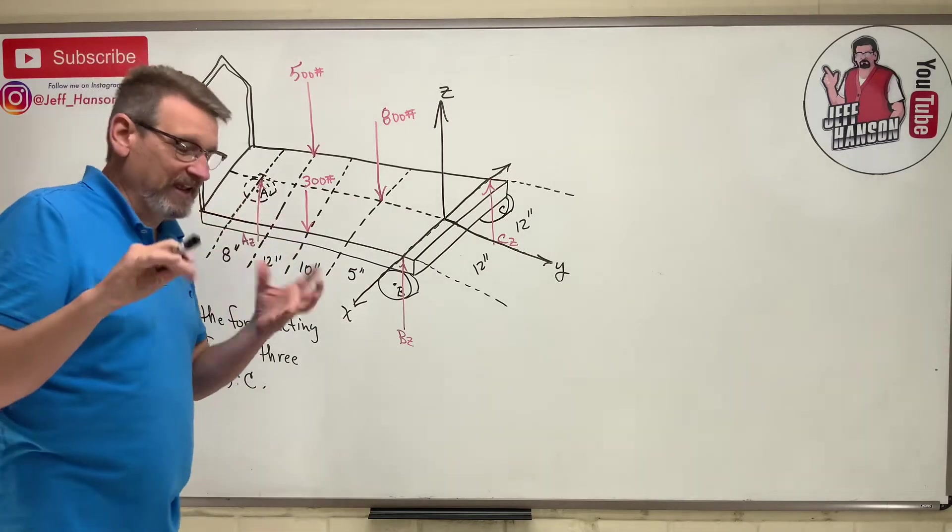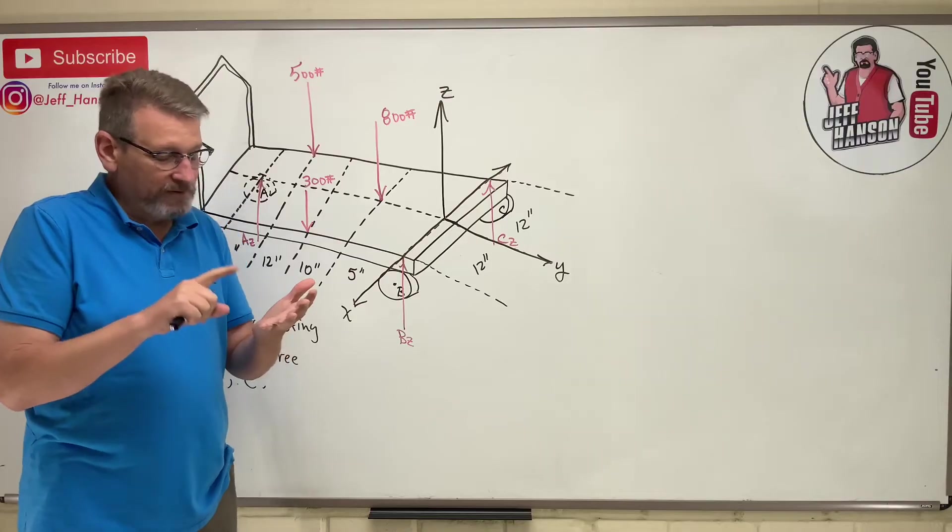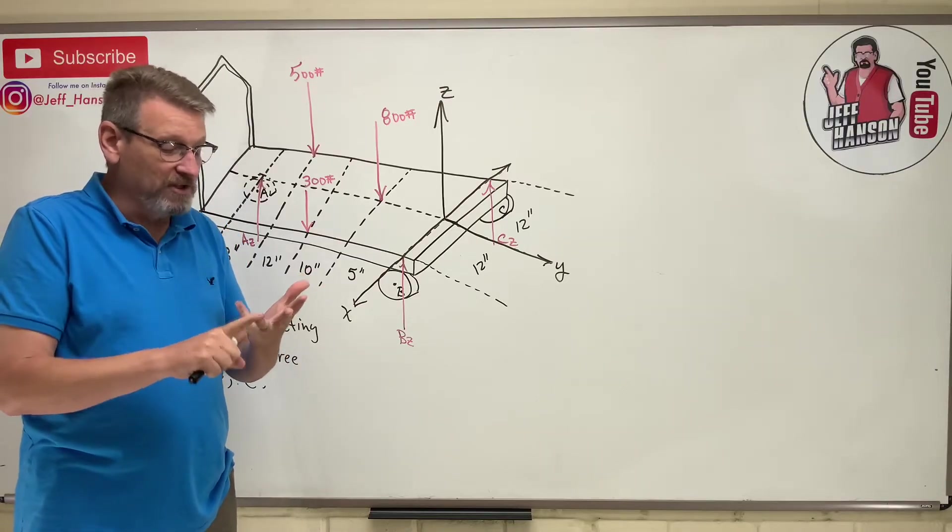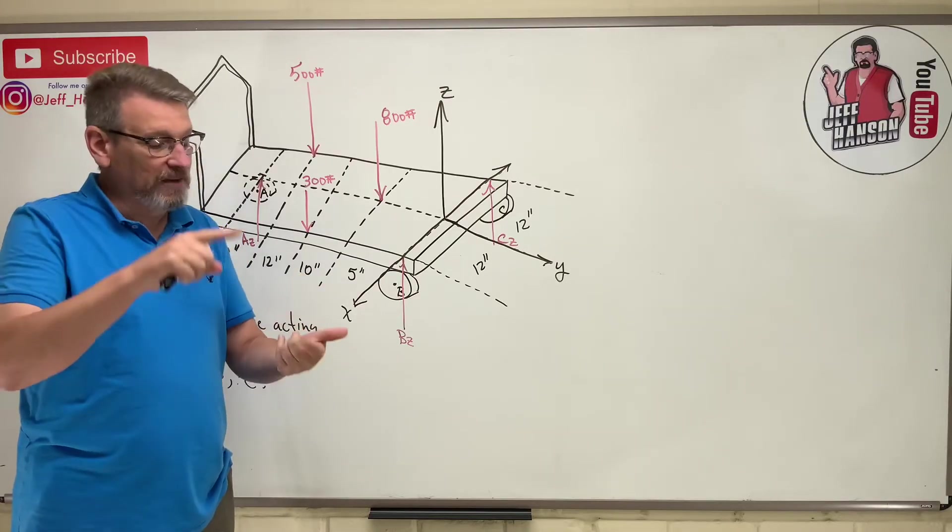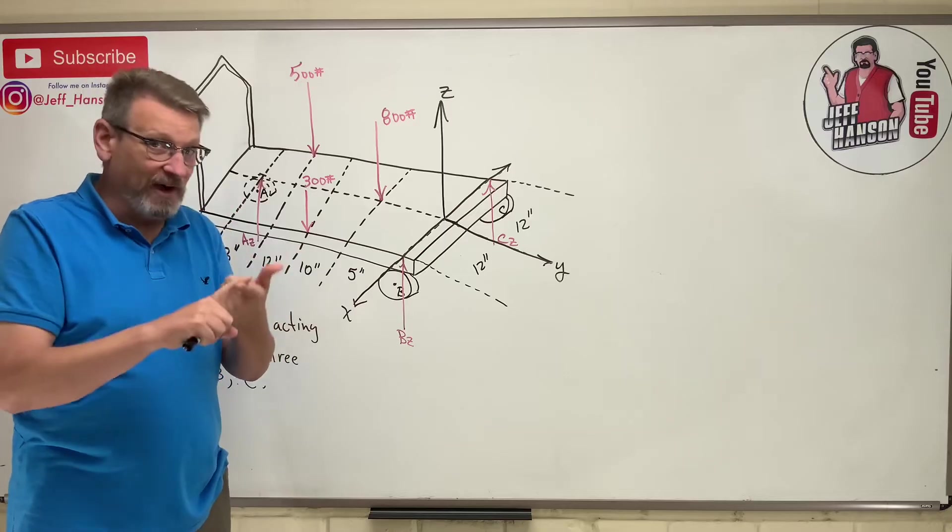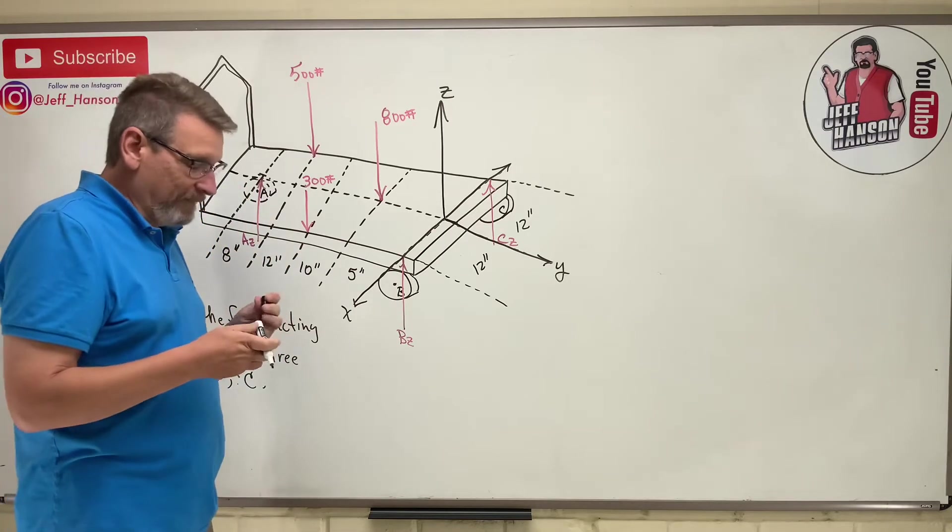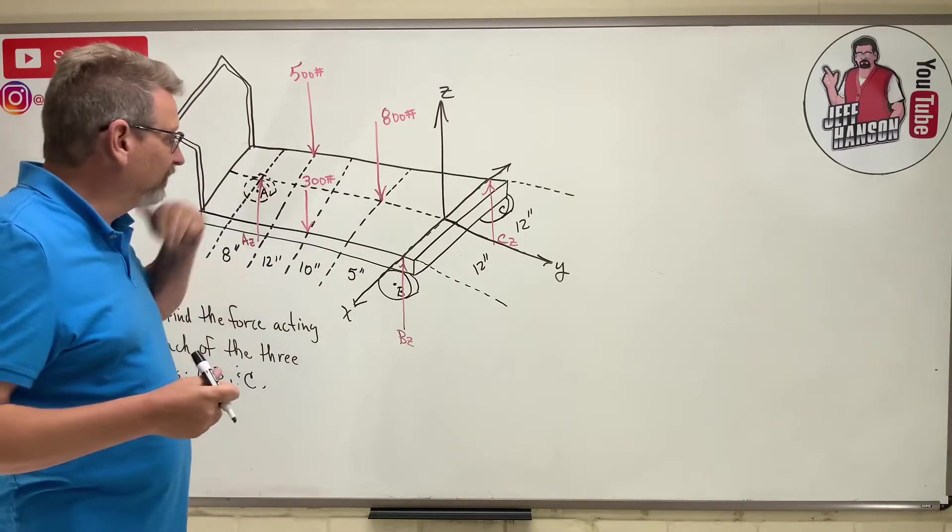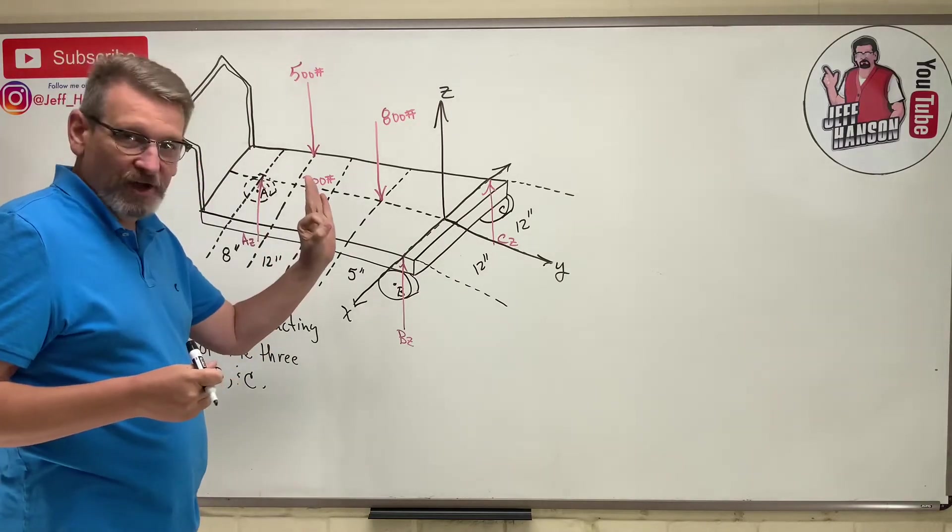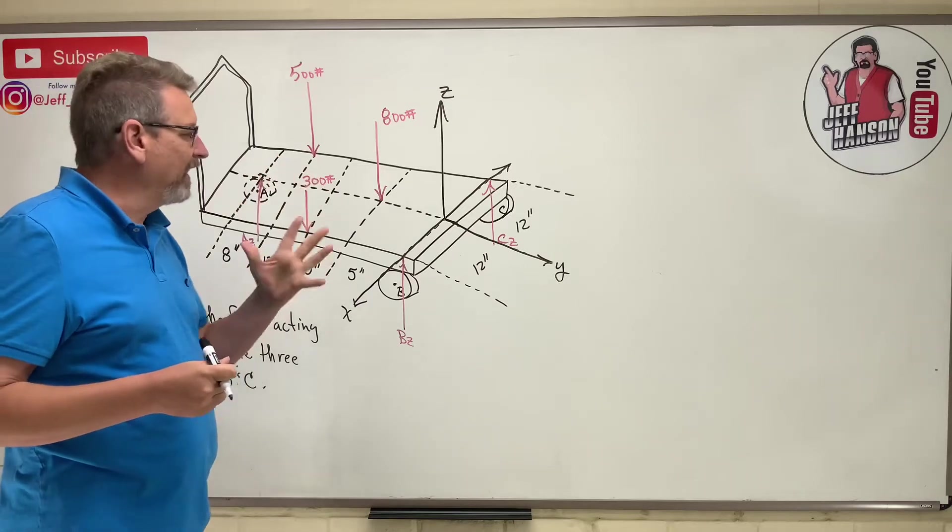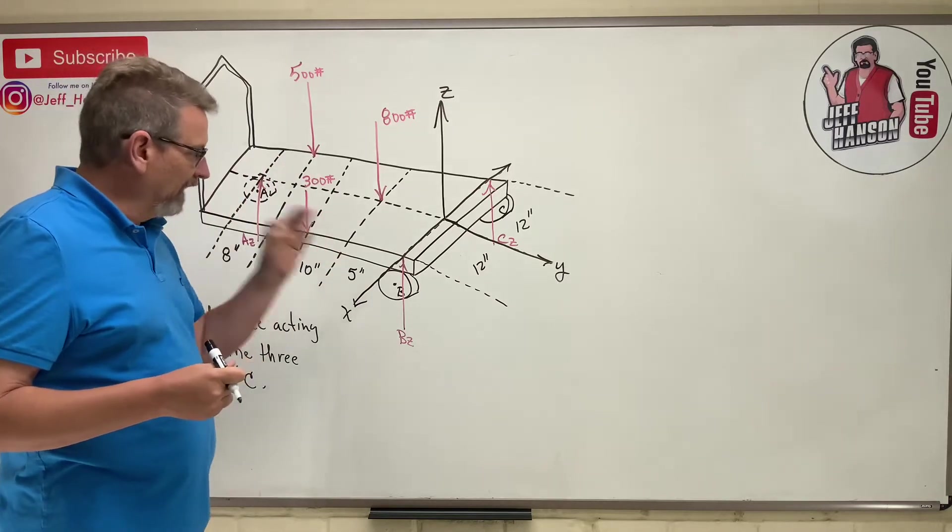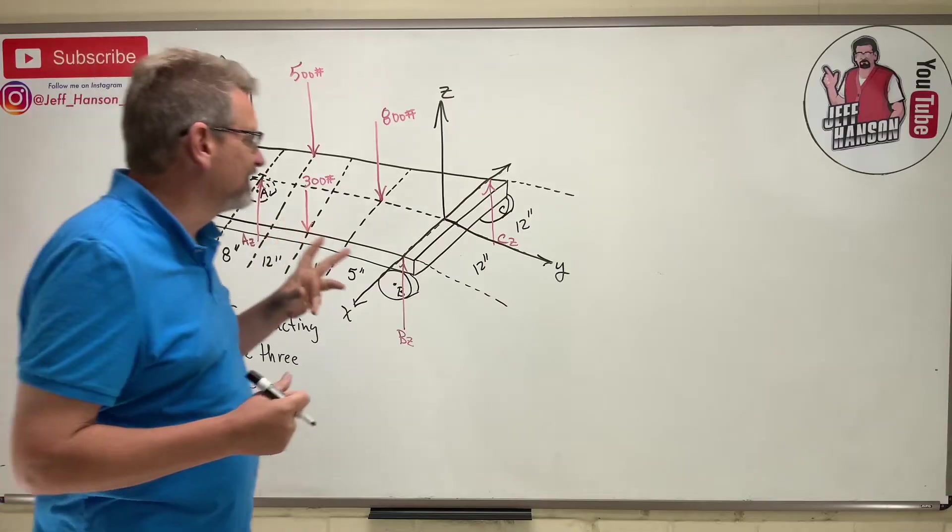Now what equations can we write from this? We have six in 3D: we have the forces in the x, the force in the y, the force in the z, and the moments about the x, a moment about the y, and a moment about the z. So we have six equations to write. Now right off the bat, how many forces in the x do we have? None. How many forces in the y do we have? None.